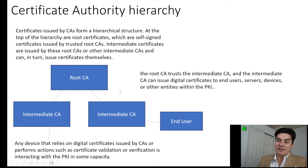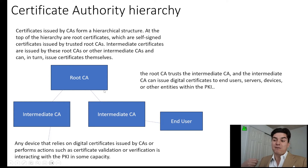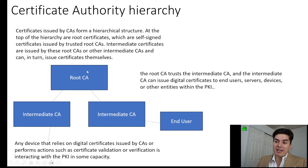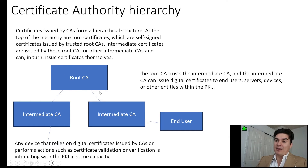In an enterprise environment, a lot of the times you'll see them take the root certificate authority offline, because if it's offline then it can't be compromised. When they want to update something, they just place it back on the network. All the devices recognize this as the root certificate authority, and if you want to update, it can push that out, and then they take it back off to secure the system.